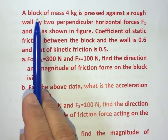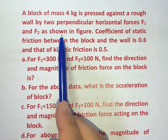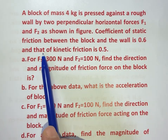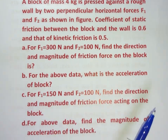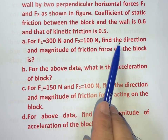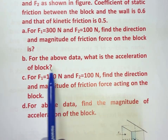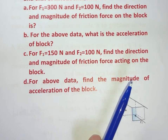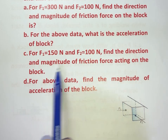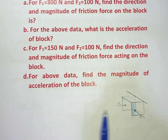Hello friends. Today's question: a block of mass 4 kg is pressed against a rough wall by two perpendicular horizontal forces F1 and F2 as shown in the figure. Coefficient of static friction between the block and the wall is 0.6 and that of kinetic friction is 0.5. We have to calculate four things: for F1=300N and F2=100N, find the direction and magnitude of frictional force on the block, and also find the acceleration. For Part C, F1=150N and F2=100N — again find the direction and magnitude of frictional force and the acceleration.